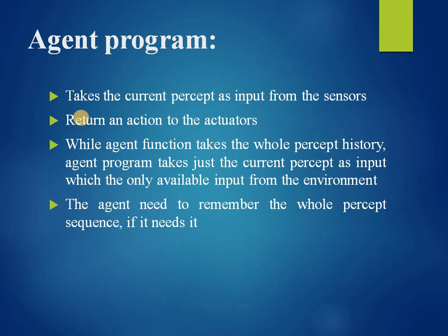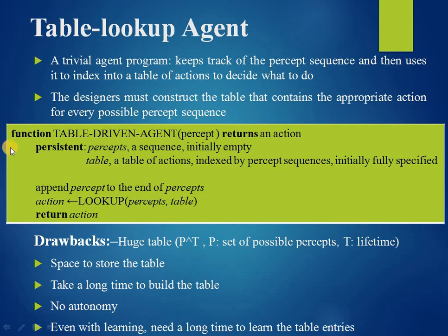The agent program takes just the current percept as input because nothing more is available from the environment. If the agent's action needs to depend on the entire percept sequence, the agent will have to remember the percepts. The trivial agent program shown here keeps track of the percept sequence and uses this to index into a table of actions to decide what to do. This table represents the agent function that the agent program implements.